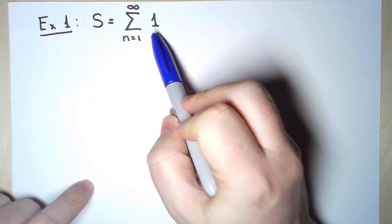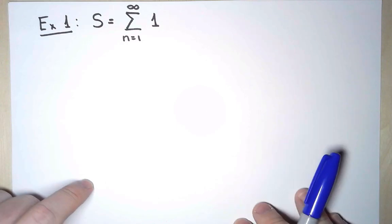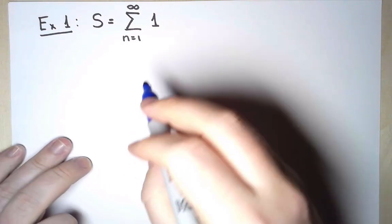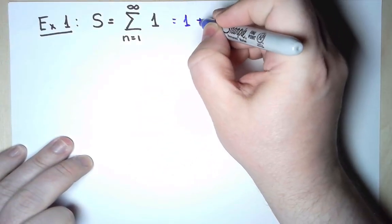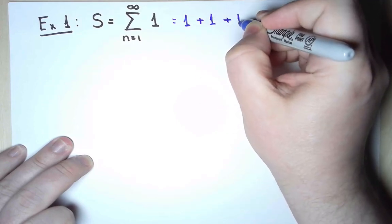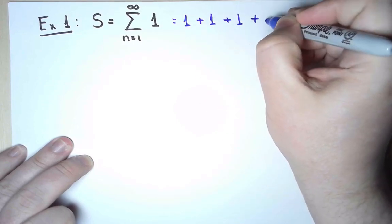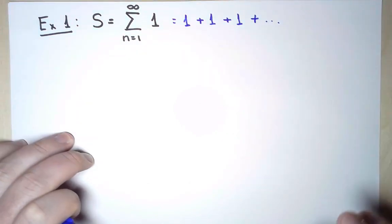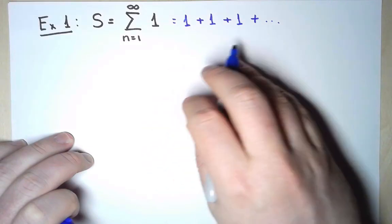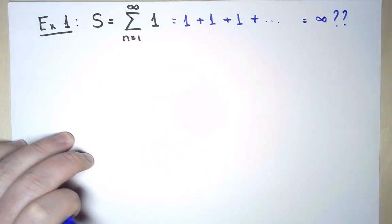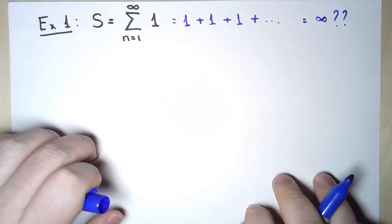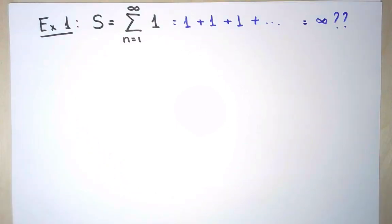The first example is the sum from n equals 1 to infinity of the constant term 1. What does this mean? Well, when n equals 1, I add 1. When n equals 2, I add 1. When n equals 3, I add 1, and so on, infinitely many times. It's clear what is going to happen — intuitively, this has to be infinity. It can't possibly be anything else. But I want to do it from the definition and make sure that the definition reaches the same conclusion.